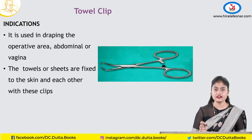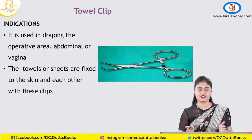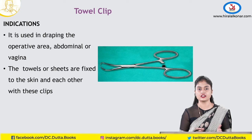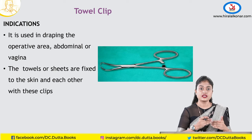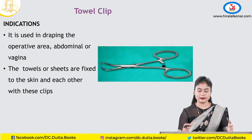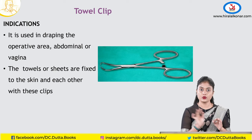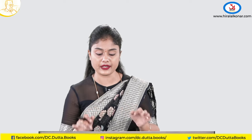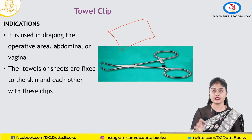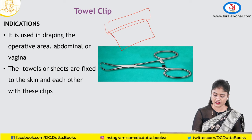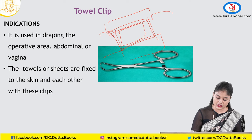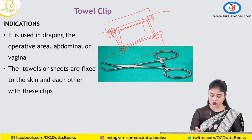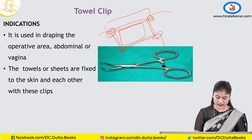Coming to the towel clip. After painting the patient with the sponge holding forceps, the next step is draping. The steps are: position the patient, drain the bladder, paint, then drape. Draping means covering the patient with a green towel on all sides except the surgical site. The towel clip is used to hold the drapes in the operative area.